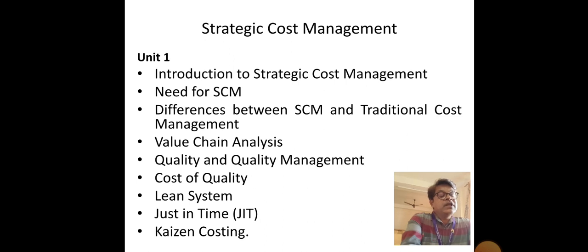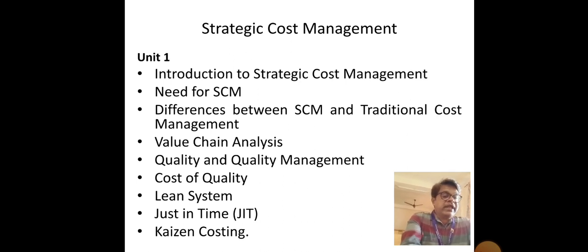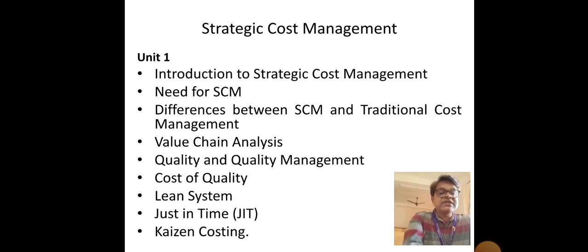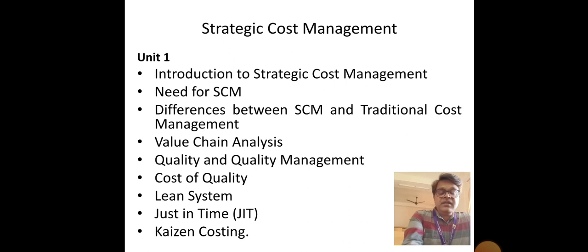For this introduction, let me brief the other topics of chapter number 1. The second topic is the need for strategic cost management — various purposes for which the SCM concept is required by a manufacturing concern or a service organization. The first need is for enhanced efficiency: achieving something at a reduced cost with minimum efforts. Other needs include reducing cost of production or rendering services, and improving the quality of products or services offered by the organization.